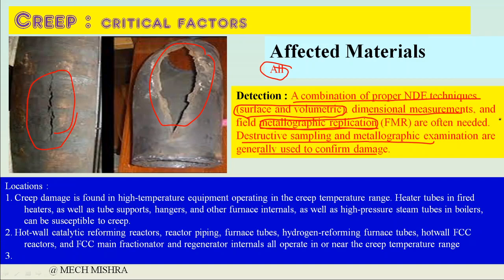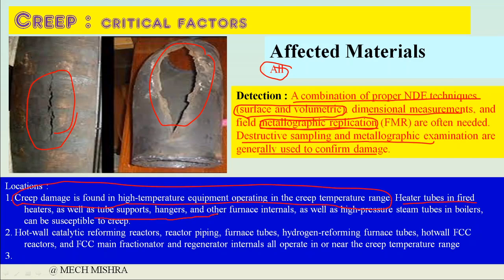What are the locations in a plant where creep can be seen or suspected? Creep damage is found in higher-temperature equipment operating in the creep temperature range. Examples include heater tubes in fired heaters, tube support hangers, other furnace internals, and high-temperature steam tubes in boilers.